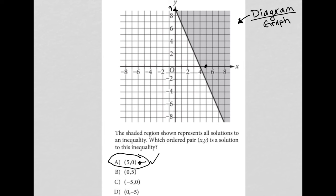But let's just confirm that the others are not in the shaded region. Choice B, (0,5). Well, (0,5) is actually right here. So, that's not in the shaded. Negative (5,0) would be right here. So, that's also not in the shaded. And (0,-5) would be right here. So, also not in the shaded. Choice A is the correct answer.